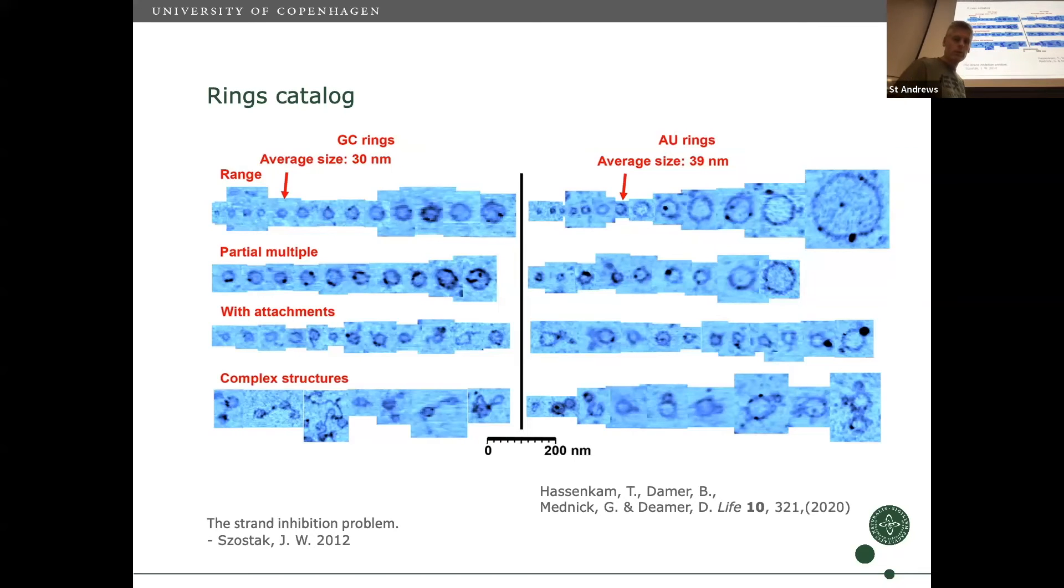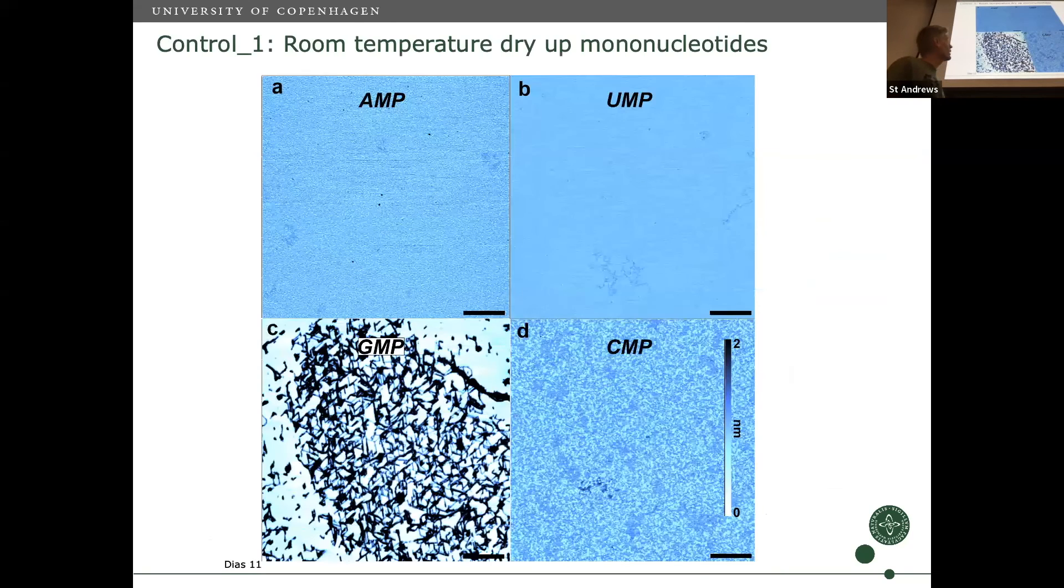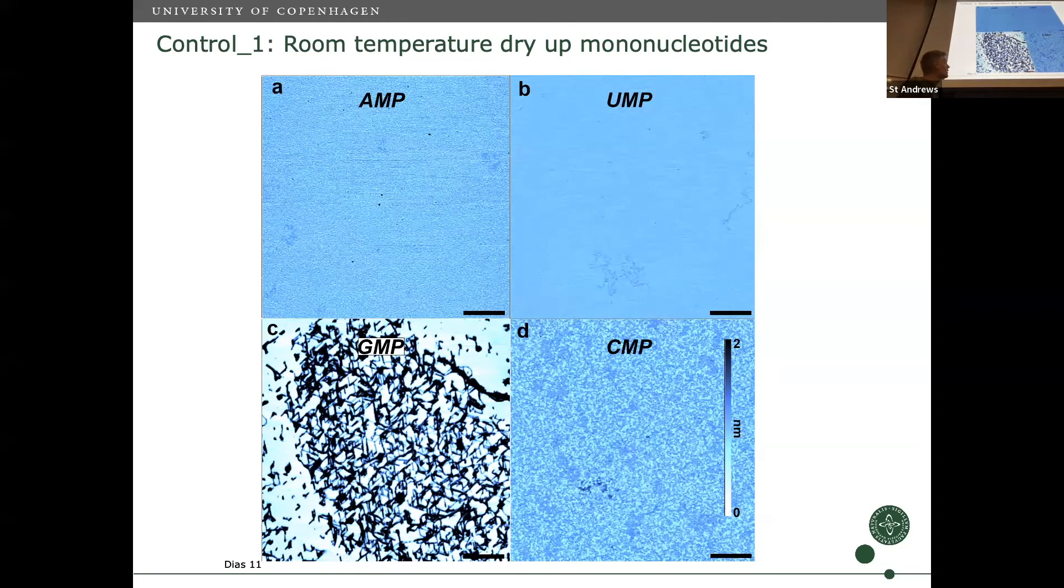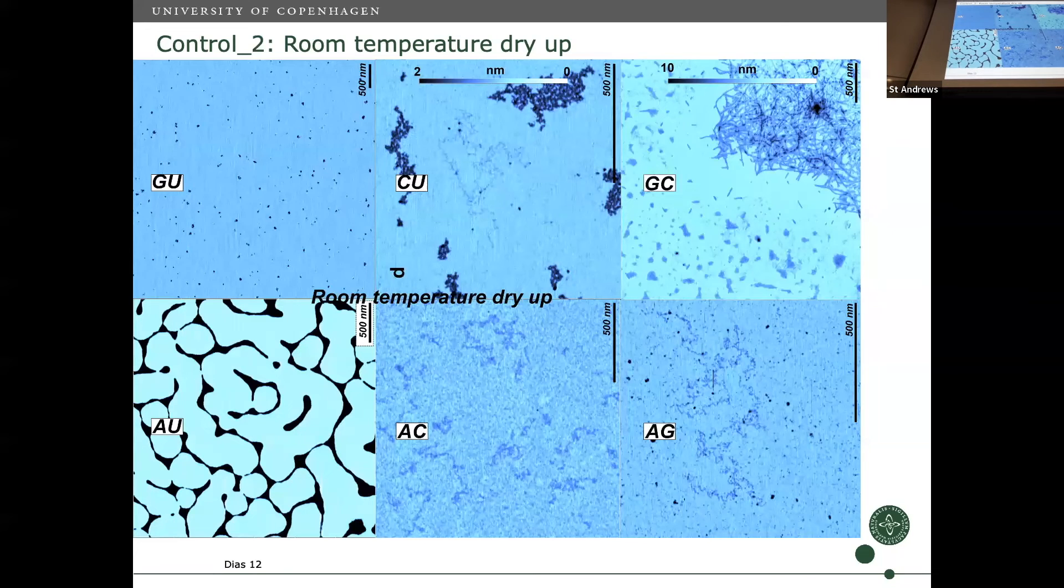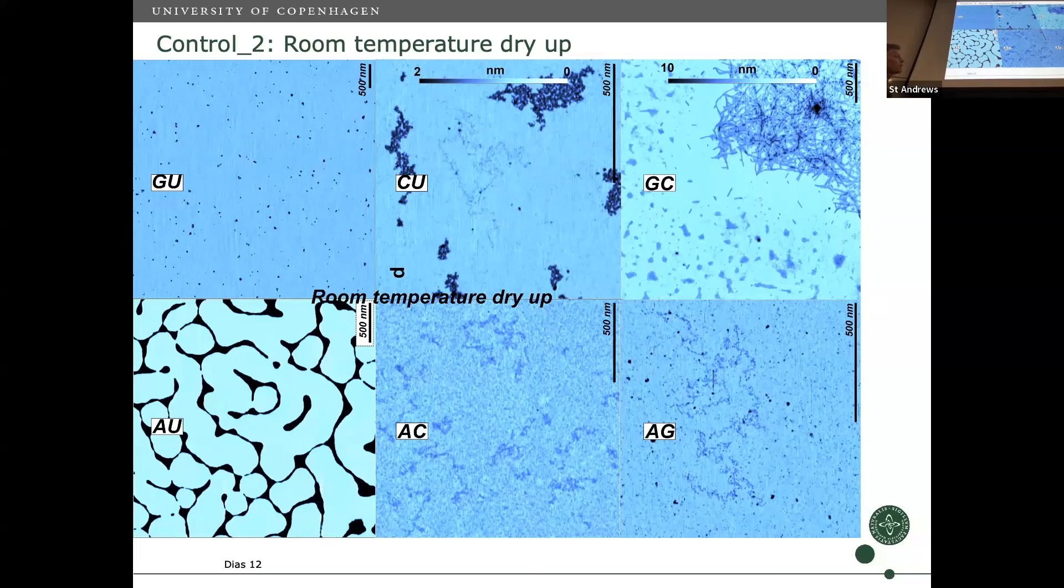When I tried to publish this I got pushback from reviewers saying you're just seeing contaminants from the lab. So I had to do control experiments. First, looking at what I got if I just dried up at room temperature. You see crystallization of the monomers on the surface, something kind of stringy but in most cases you don't see polymers. I could also do combinations and let them dry, and again we see crystalline features and some stringy stuff.